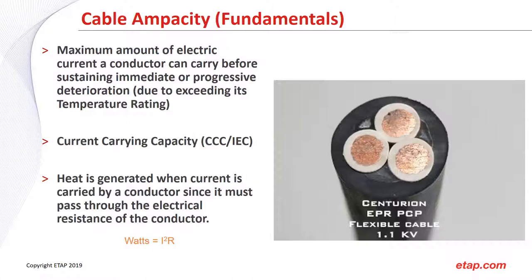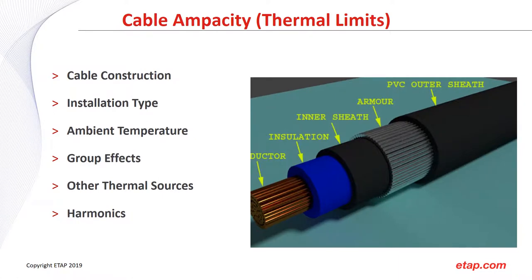Another term for this is current carrying capacity, or CCC, which is how it's commonly known in the IEC world — anywhere using 50 Hz systems. Heat is generated when current is carried by a conductor, since it must pass through an electrical resistance — in this case, copper. The equation is Power (watts) = I²R. For cable ampacity, it's also very important to consider thermal limits, which include all layers of the cable construction from the outer PVC sheath down to the conductor, including the insulation, inner sheath, and armor.